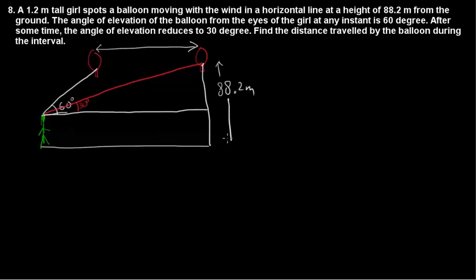The height is 88.2 meters. The girl is 1.2 meters tall, so subtracting gives us 87 meters. The triangle is ABC at ground level.